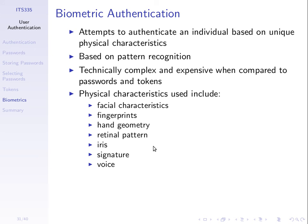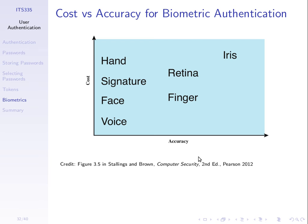Which one is more accurate? A rough comparison is shown in a plot of cost versus accuracy. Cost is how much it costs to buy the equipment; accuracy is how well it authenticates or finds the correct person. The worst accuracy are the ones on the left: voice, face, signature and hand — meaning that someone may masquerade as you more easily.